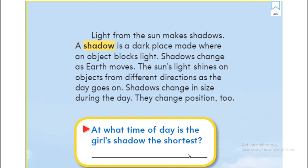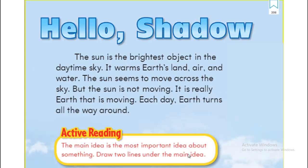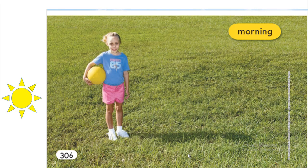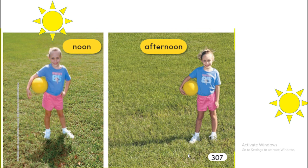When the Earth moves, the shadow is going to change. The sunlight shines on an object from a different direction as the day goes on, so shadows change in size during the day and also change position. At what time of day is the girl's shadow the shortest? In the noon — excellent!